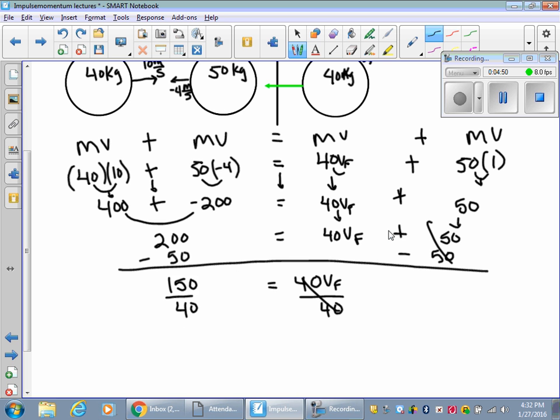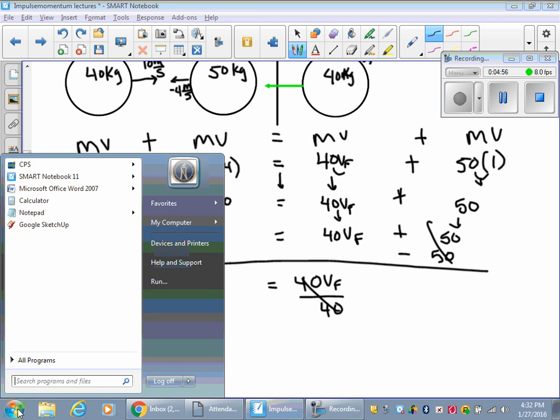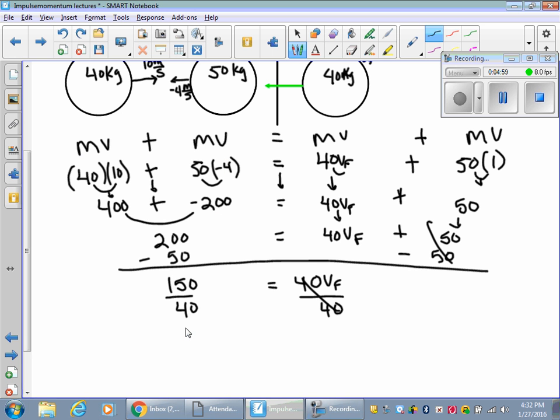This is almost 4, but it's not quite. Let's see. I don't know that off the top of my head, actually. Yeah, I do. This comes out to 3.75. Positive 2.75 meters per second. My velocity final. Object A. So let's see. Was I right?